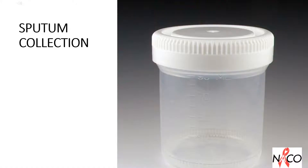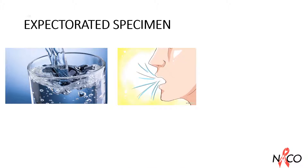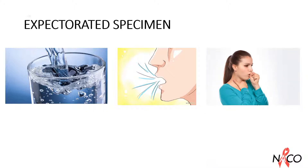Sputum should be collected in a sterile plastic screw-capped container which should be well labelled and leak-proof. Sputum can be expectorated or induced. For collection of expectorated sputum, explain to the patient to rinse their mouth with plain water before bringing up the sputum. It is essential that sputum containing purulent material or destroyed tissue is collected and not saliva. The patient is instructed to inhale deeply 2 to 3 times, which will initiate a cough reflex in most patients. The sputum is retained in the mouth and spit into the pre-labelled container without spilling. Some patients may not be able to expectorate with deep breathing, in which case demonstrate the technique to them.